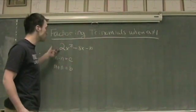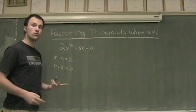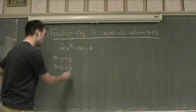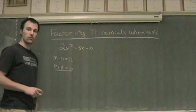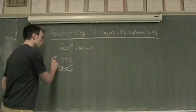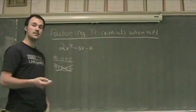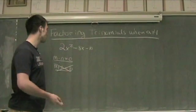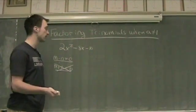But now our A is 2. So one of these two rules no longer directly applies, and that rule is that second rule, that addition rule. So this no longer applies. The rule that still applies though is M times N is equal to C. So that's the first thing I'm going to identify.